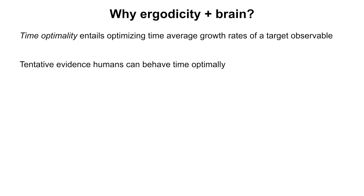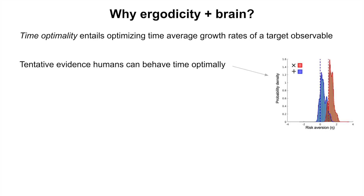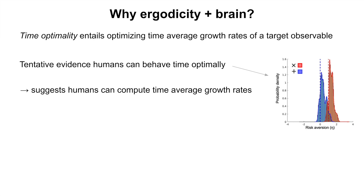There's tentative evidence from our group that humans can behave time optimally under experimental conditions. We found that people could shift their risk aversion according to the dynamical settings they were in, in order to maximize the time average growth rate of their wealth. If true, this suggests that humans can compute time average growth rates. As a neuroscientist, the obvious question is: how does the brain do this? I'm going to speculate a little about how I think this might happen and also how to test it.